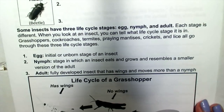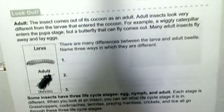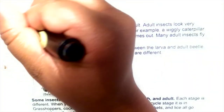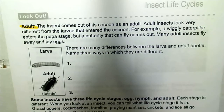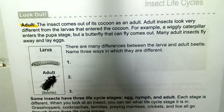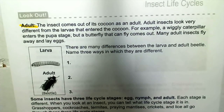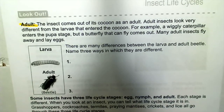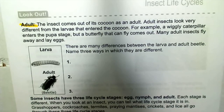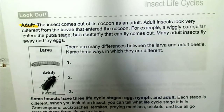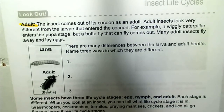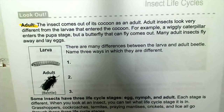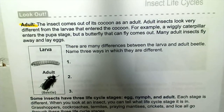The insect comes out of its cocoon as an adult. Adult insects look very different from the larvae that entered the cocoon. For example, a wiggly caterpillar enters the pupa stage, but a butterfly that can fly comes out. Many adult insects fly away and lay eggs. There are many differences between the larvae and the adult.